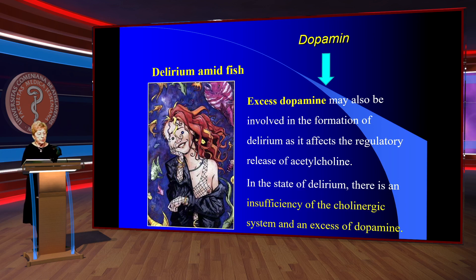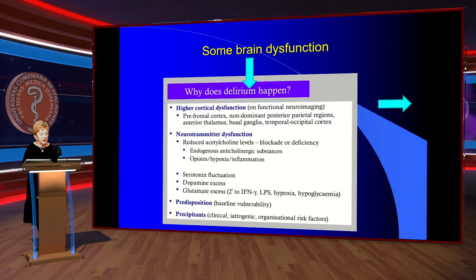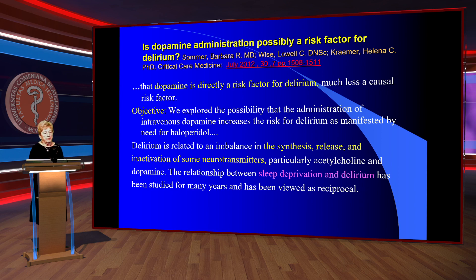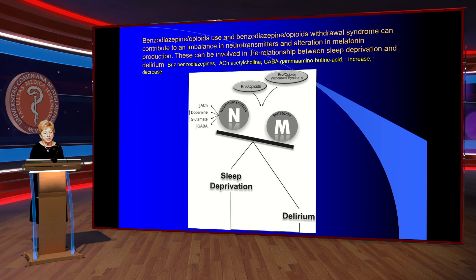Excess dopamine may be involved in the formation of delirium as it affects the regulatory relays of acetylcholine. In the state of delirium, there is an insufficiency of the cholinergic system and an excess of dopamine. Limbic dysfunction, high cortical dysfunction, and neurotransmitter changes including serotonin are also implicated. Benzodiazepines, opioids, and their withdrawal syndrome can contribute to neurotransmitter imbalance and alteration in melatonin production. Dopamine administration is possibly a risk factor for delirium.